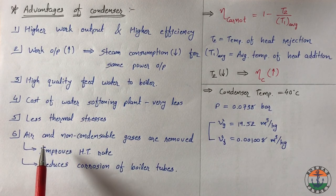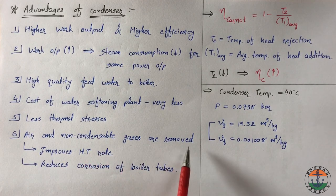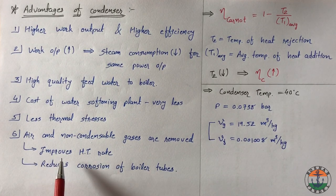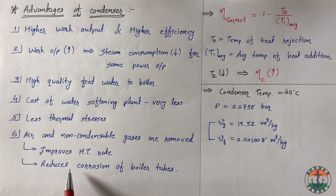In the condenser, air and non-condensable gases are removed from the steam. This improves heat transfer rate and also reduces corrosion of the boiler tubes.